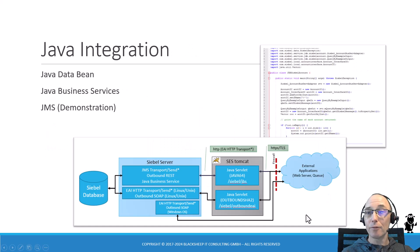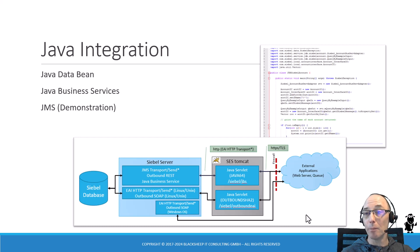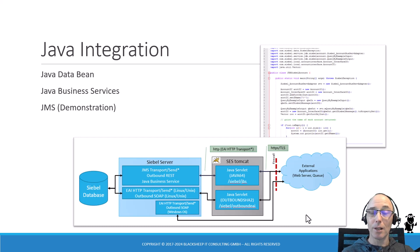We also cover more traditional integration approaches that have been updated over the years. If you integrate with Java — such as the Java Data Bean, Java Business Services, or JMS — you're in for a treat in this module.